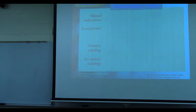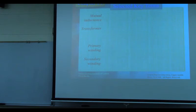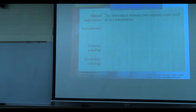A transformer consists of two coils placed together. The working principle is magnetic coupling: voltage or current in the primary induces voltage or current in the secondary. The first coil is called the primary winding, the second is the secondary winding. The turn ratio is defined as the secondary number of turns divided by the primary number of turns.